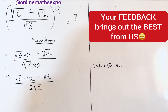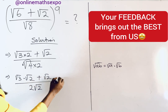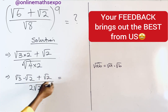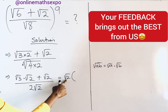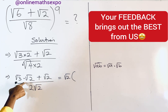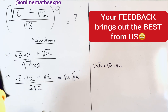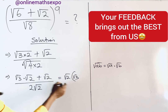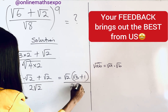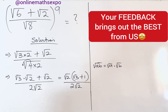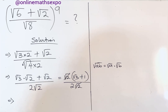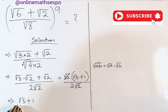Looking at the numerator, you can see that you can easily factor out root two. So we factor out root two, divide it into root three giving root three, and divide it into root two giving one. That is all over two root two. You can then cancel the root two, and when you do that you are going to have root three plus one, all over two.